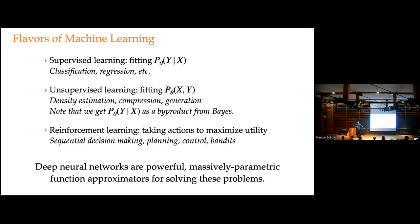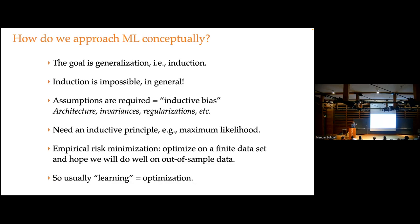Deep neural networks — everybody's super excited about deep learning. They're powerful, massively parametric function approximators, and they're really useful for solving all these kinds of problems. But I just want to say this is not the only game in town. There are lots of ideas, and you want to use the right tool for the right job. Deep learning is often the right tool, but it is not always.